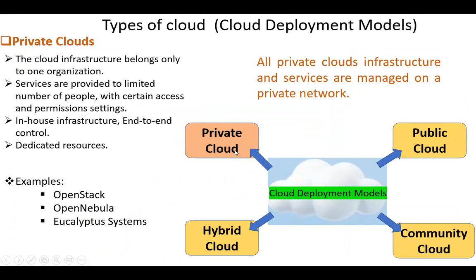First, private clouds. The cloud infrastructure belongs only to one organization. Services are provided to a limited number of people with certain access and permission settings. The infrastructure is in-house, and the control is end-to-end. One more characteristic: the resources are dedicated. All private cloud infrastructure and services are managed in a private network. Examples are OpenStack, OpenNapola, and Eucalyptus systems.